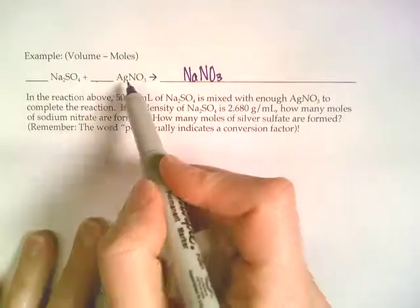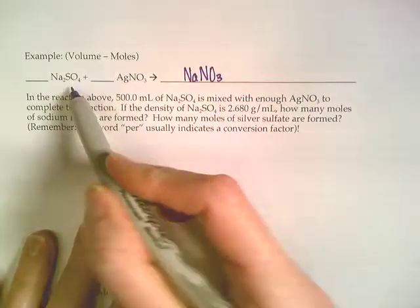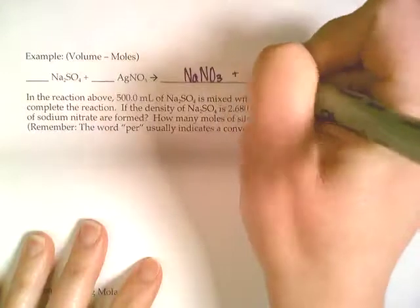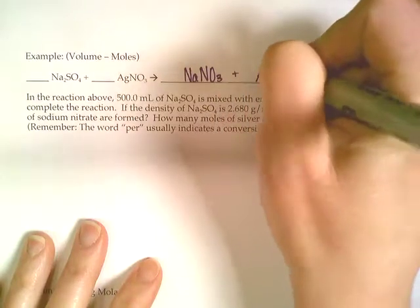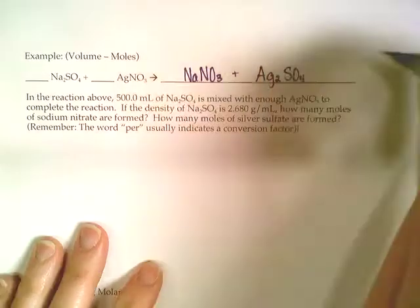Then we're going to have the silver combined with the sulfate. Now silver's plus 1 and sulfate's minus 2, so that would make Ag2SO4.